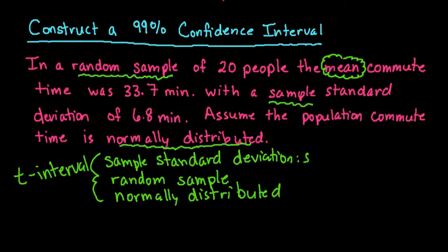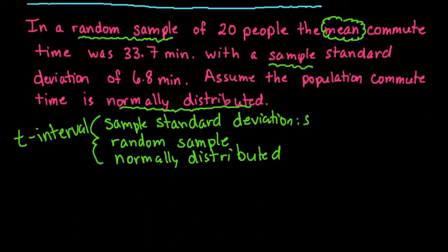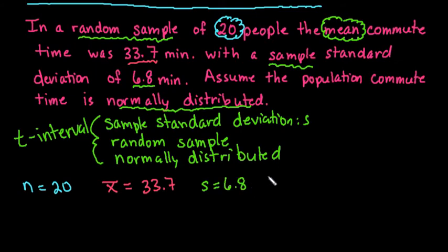I'm going to list out all the important information we need from this. We need the number in the sample, so in this case we have 20 people. We need the sample mean, x̄, which was 33.7 minutes. We need the sample standard deviation, s, and the sample standard deviation was 6.8.